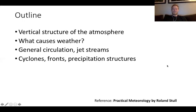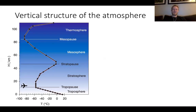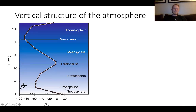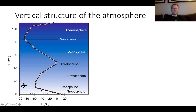Let's jump right into it starting with the vertical structure of the atmosphere. There are a number of different layers, but what really matters for our purpose is just this lower layer — the troposphere — which is from the Earth's surface up to about 12 kilometers or so. If you're flying in an airplane at cruising altitude, you're looking down at all the weather that occurs on Earth. Temperature is warmest right near the surface because of the sun heating the Earth's surface, and then both temperature and pressure decrease with altitude throughout the troposphere.